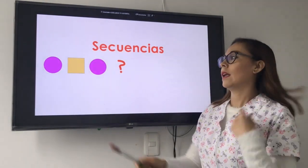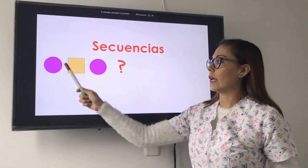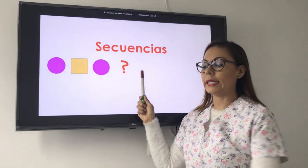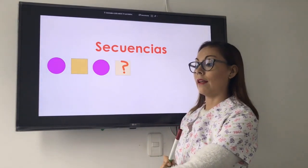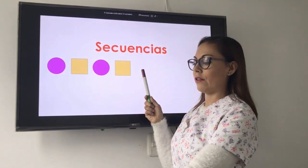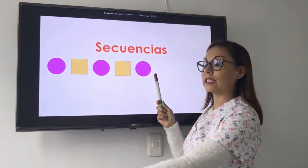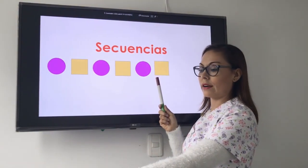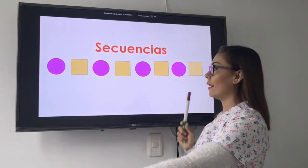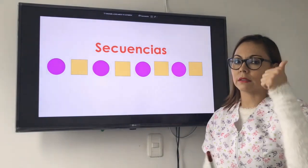Vamos a ensayar. Aquí tenemos un circle, square, circle. ¿Qué figura seguiría? Square. Very good. Vamos a ver cuál otra seguiría. Circle. Después es square, circle, and square. Very good. Si lo hiciste así, vas súper bien.